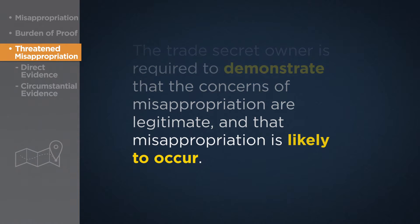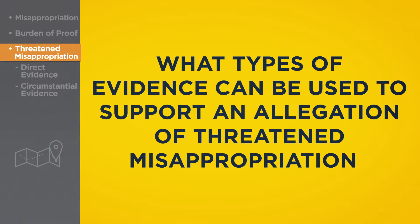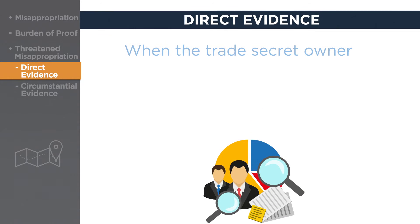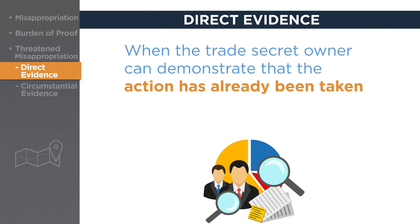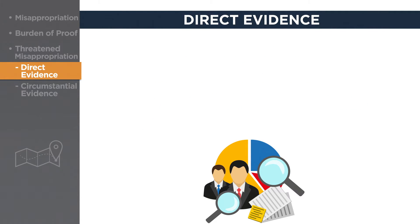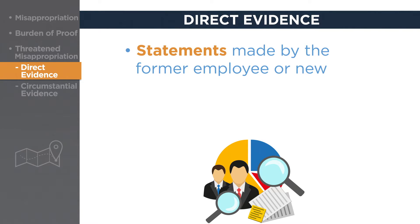What types of evidence can be used to support an allegation of threatened misappropriation? A trade secret owner may present direct or circumstantial evidence to demonstrate that there is an imminent threatened misappropriation of trade secrets. Direct evidence exists when the trade secret owner can demonstrate that action has already been taken or words have already been spoken that indicate a misappropriation of trade secrets is going to occur. Common examples of such direct evidence are statements made by the former employee or the new employer.